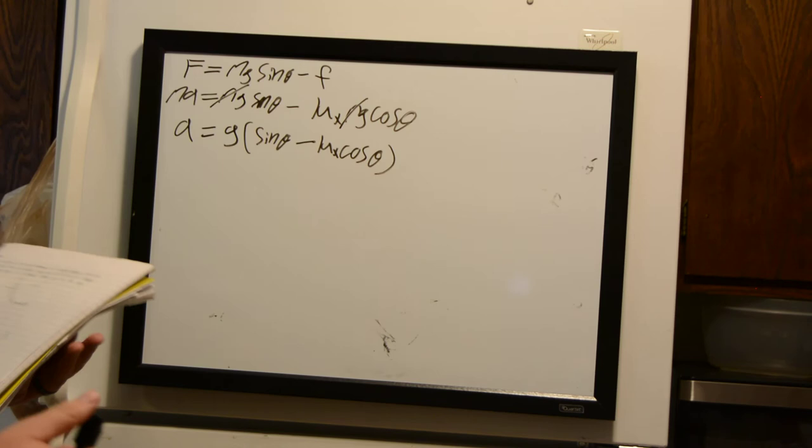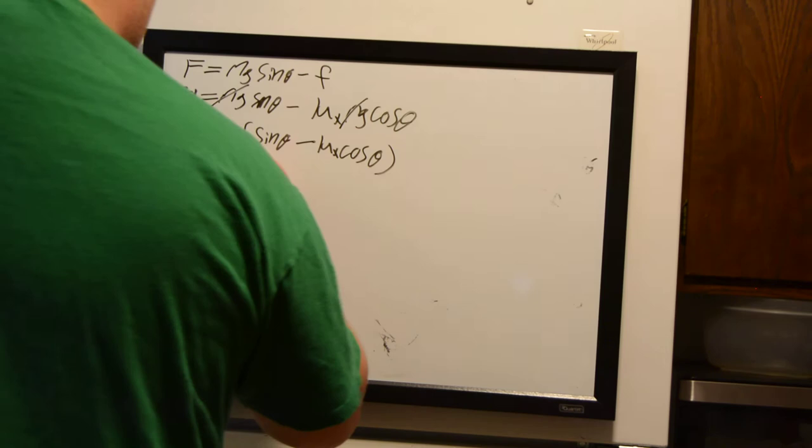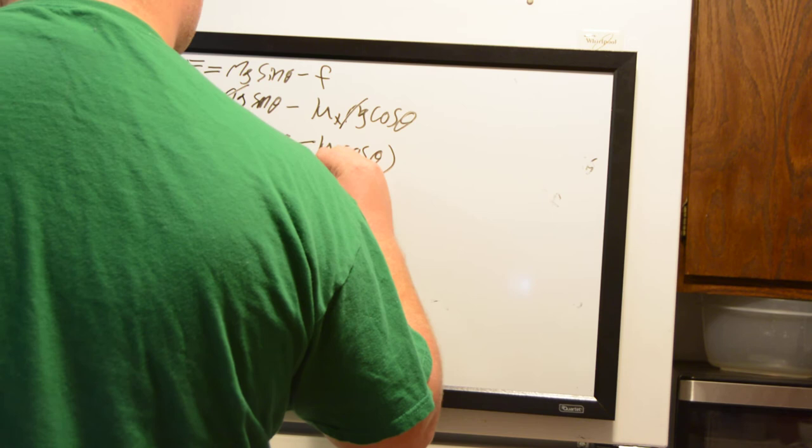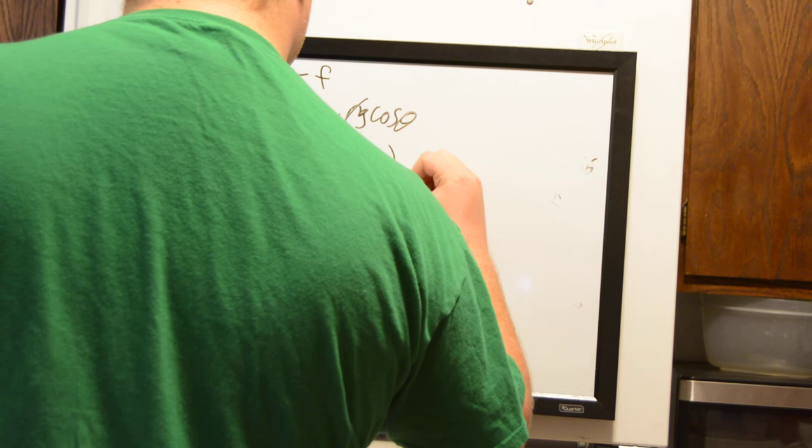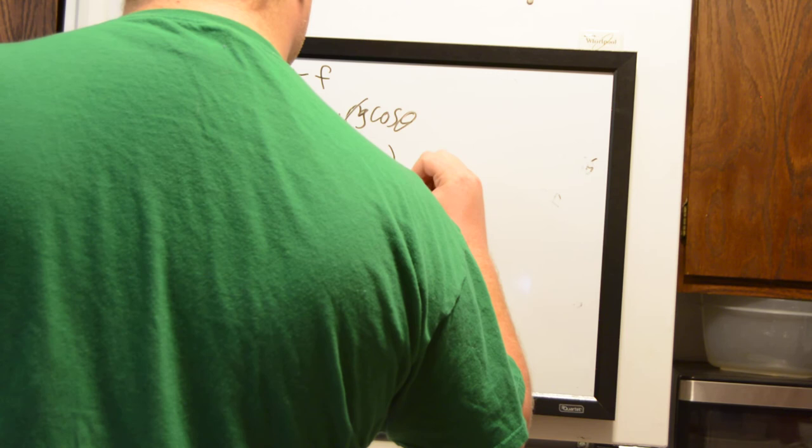For the frictional coefficient we use 0.45, the one given for the rocks, since we're looking for acceleration of the rocks back down the hill. That gives us 9.8 times sine 36 minus 0.45 times cosine of 36. Doing the math, we find that our rocks are accelerating down the hill at 2.2 meters per second squared.